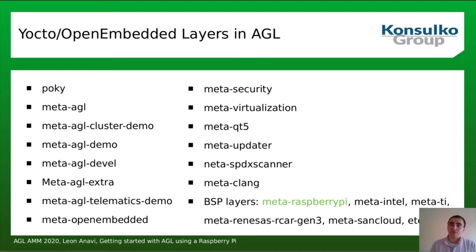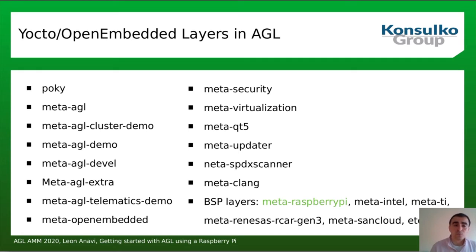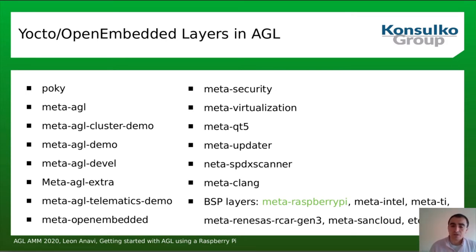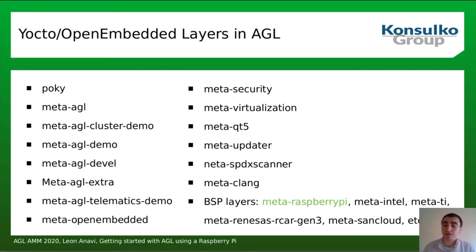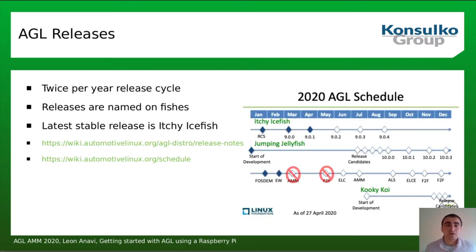This is the list of Yocto and OpenEmbedded layers in AGL. It's a long list — AGL is based on Poky and adds many AGL-specific layers, all starting with the prefix 'meta-agl'. There is also meta-openembedded, probably the most popular layer in the Yocto/OpenEmbedded ecosystem; it's a collection of sub-layers such as meta-oe, meta-networking, meta-multimedia, meta-python, and so on. Furthermore there are BSP layers — most importantly for Raspberry Pi we have meta-raspberrypi — and AGL also supports meta-intel, meta-ti, meta-renesas, and more.